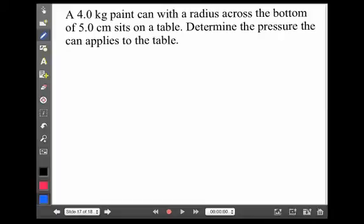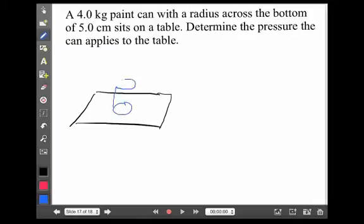Now, got to be careful here. It doesn't matter how big the table is. Because the pressure is only applied where the paint can makes contact with the table. In other words, the pressure is only applied to that area of contact. If we consider, then, what's happening here, the force must be equivalent to the weight of the paint can, because that's what's being applied to the table.